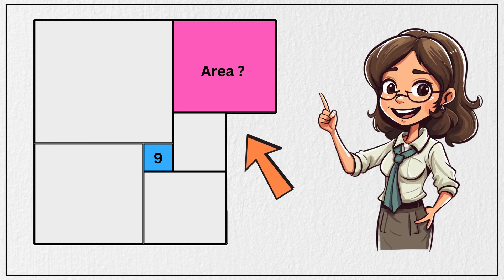Can you solve this tricky geometry question? We are given a blue square with an area of 9 square units and 4 squares arranged around this blue square like this.